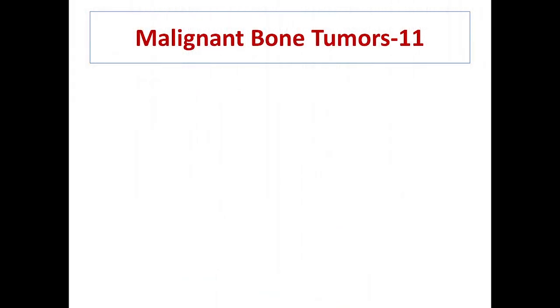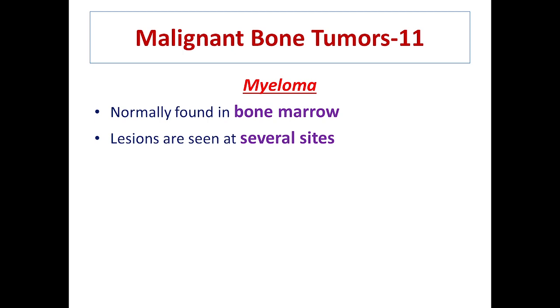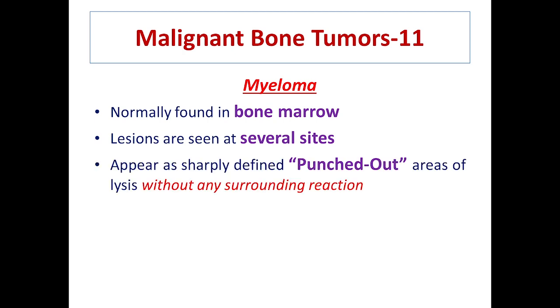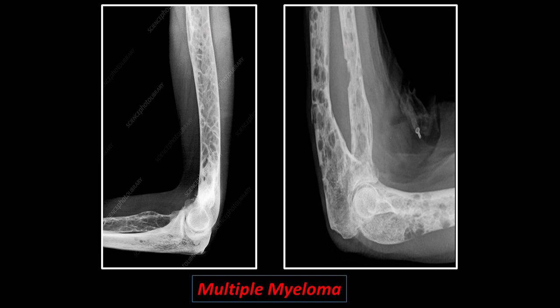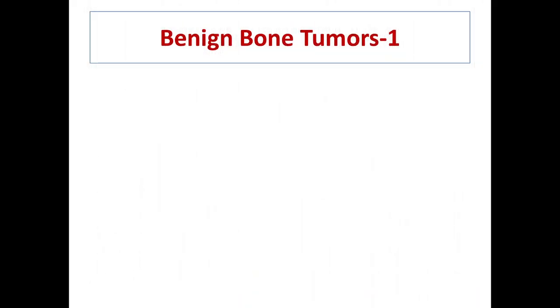Myeloma is a tumor of myeloid cells, which are precursors of RBCs and WBCs present in the bone marrow. Lesions are seen at several sites, and pathological lesions appear as punched-out areas of lysis without any surrounding reaction. In this radiograph, multiple myeloma in the bone marrow of the humerus, radius, and ulna can be seen, with very clear punched-out areas of lysis.